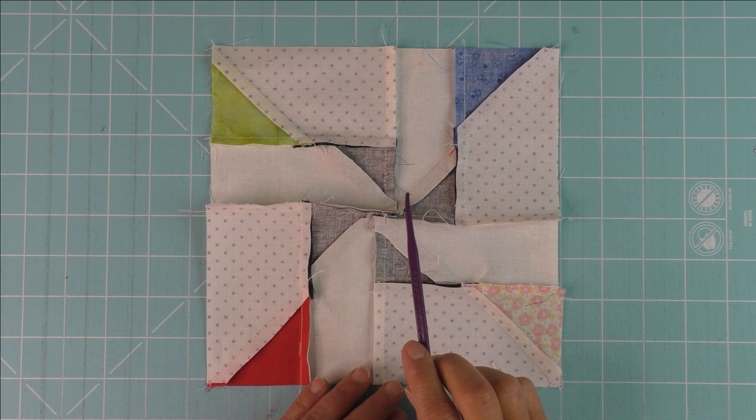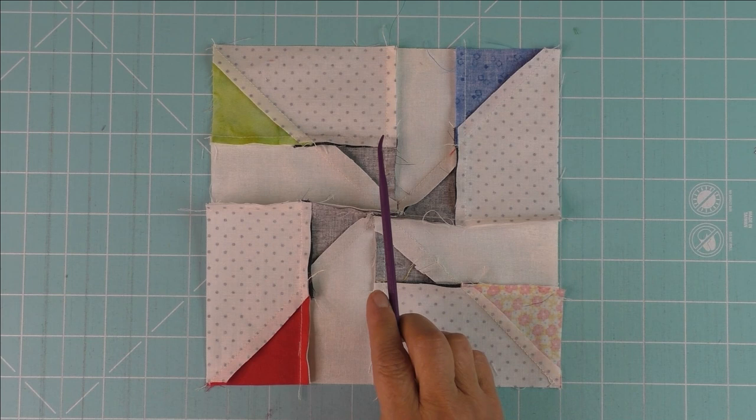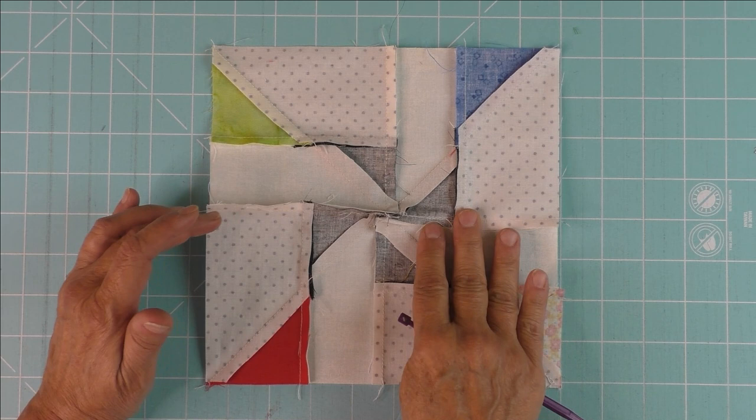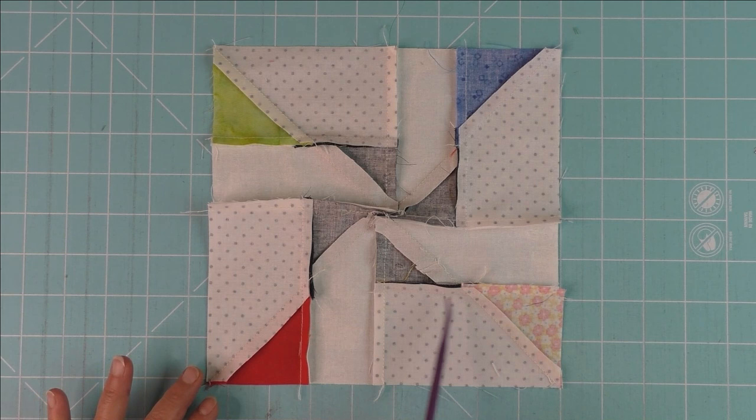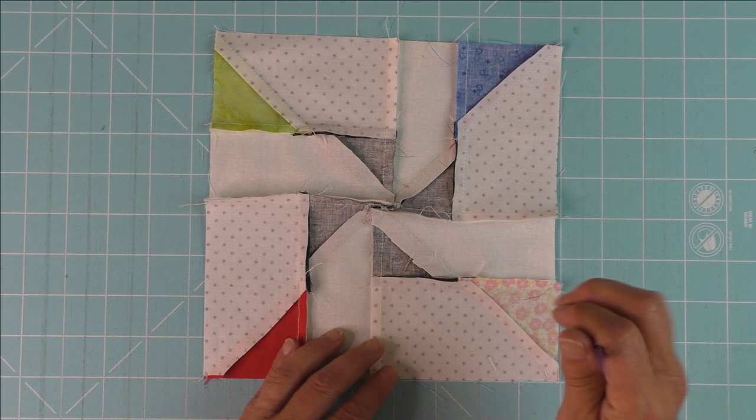Now we're going to open it up and look at the underside. You see that this seam is going in this direction and this seam is going in that direction. We want this seam to go down this way and this seam to go up so these major seams are going in a clockwise circle.